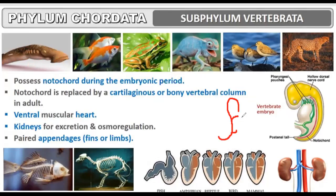Remember: for animals, the body part facing the floor is ventral and the opposite is dorsal. For human beings, the side where the stomach is present is ventral, and the side where the vertebral column is present is dorsal. This understanding of anatomical orientation will be useful when you do dissections in medical college, nursing, or any biology-related field.